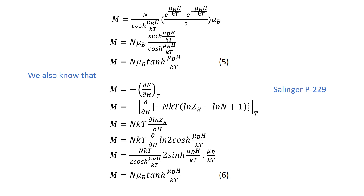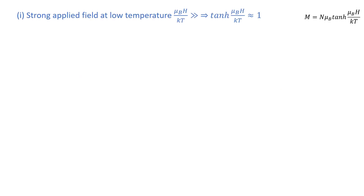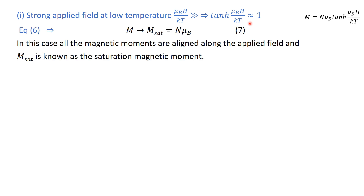We now consider two limiting cases. First, when we have a strong applied field at low temperature, the quantity μ_B H / kT is a large number, and the hyperbolic tangent approaches one. Applying this approximation to equation 5 or 6 gives M_sat = Nμ_B. This is the case when all magnetic moments are aligned parallel to the applied magnetic field, called the saturation magnetic moment, denoted with the subscript SAT.